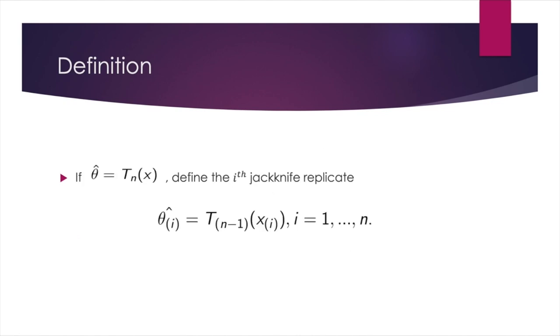If theta hat equals tn of x, define the i-th Jackknife replicate theta hat i would be t n-1 of xi. The subscript n-1 is caused by the one observation left out. So here tn is a function. It could be a mean, it could be a standard deviation, etc.